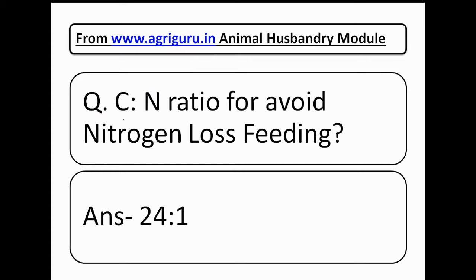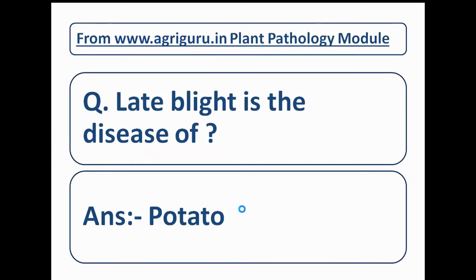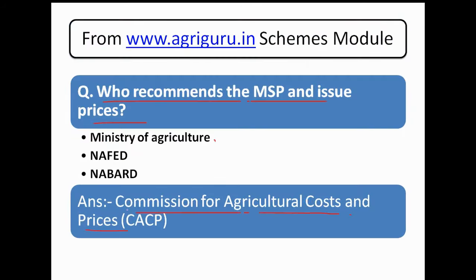Question number 32 from the animal husbandry module of agriguru.in: the C to N ratio to avoid nitrogen loss in feeding — the correct answer is 24:1. Question number 34 from the plant pathology module: late blight is the disease of which crop? The correct answer is potato. Question number 34 also asks: who recommends the MSP and issue prices? The answer is the Commission for Agricultural Costs and Prices.